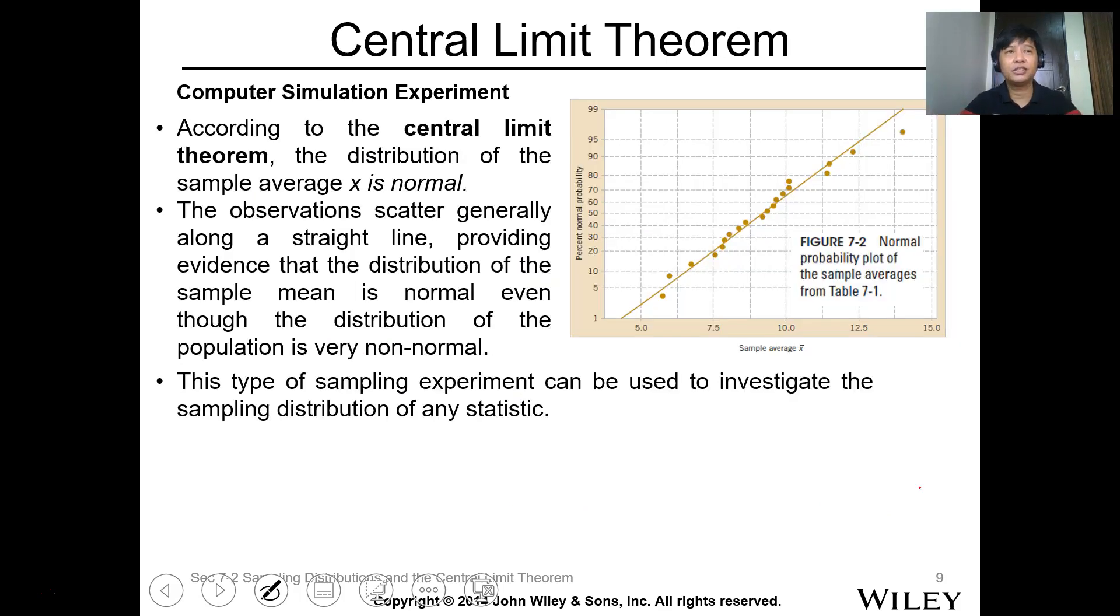But based on the central limit theorem, if you plot the sampling average and the proportion on how or the probability of how many times it could appear from the data, it will fall into a straight line in a scattered data. Then this one provides evidence that the distribution of the sample mean is normal, even though the distribution of the population is very non-normal. Meaning, in sampling distribution, it will always follow a normal distribution pattern, even though if the actual population does not follow a normal distribution because of the central limit theorem.